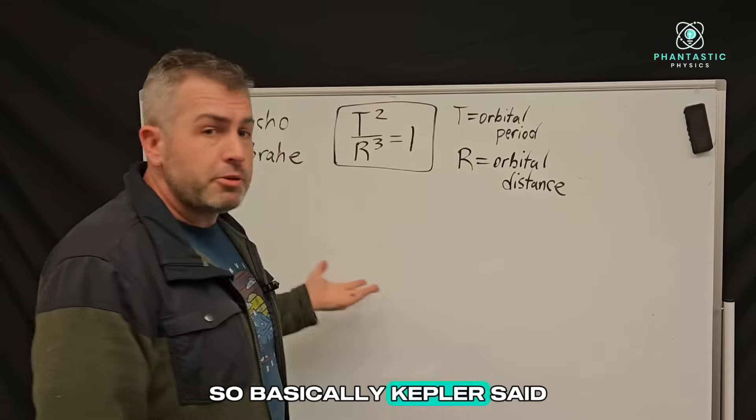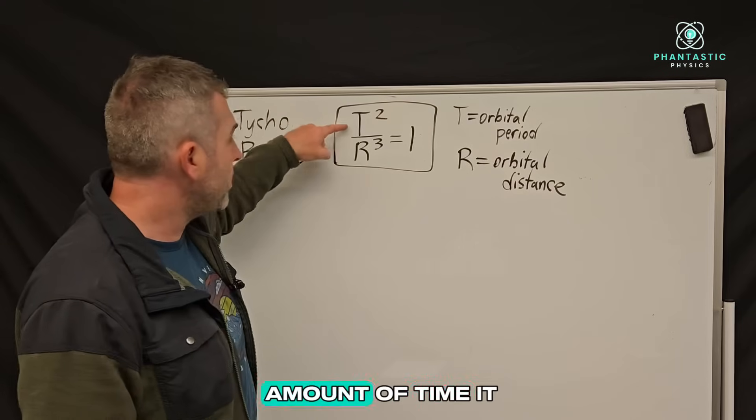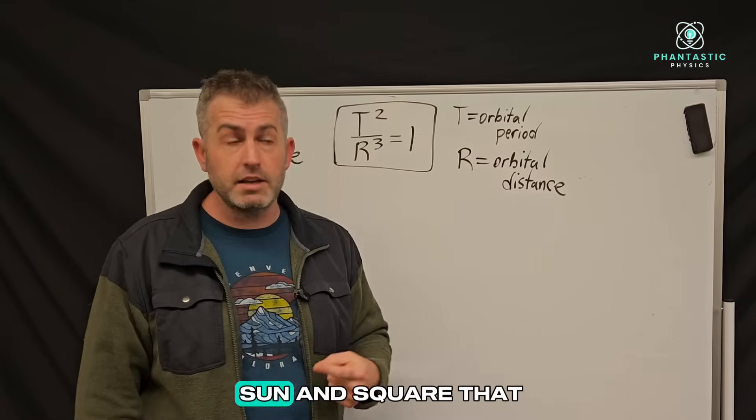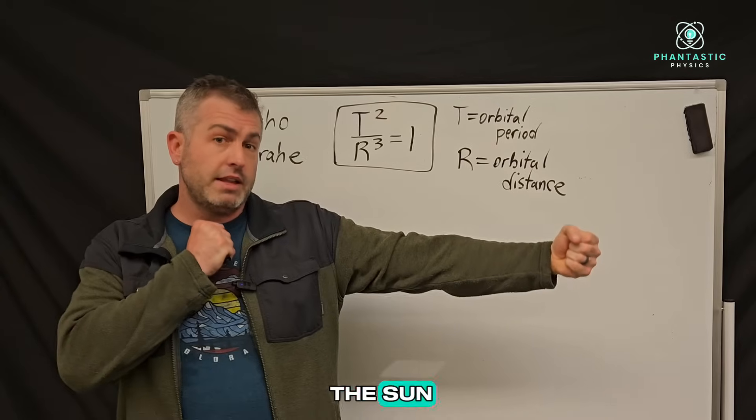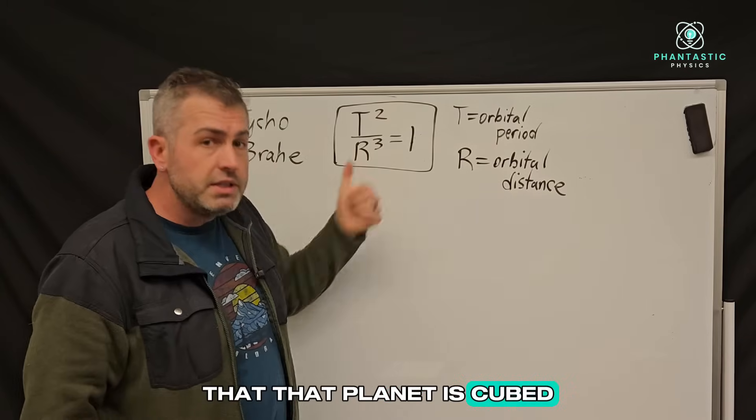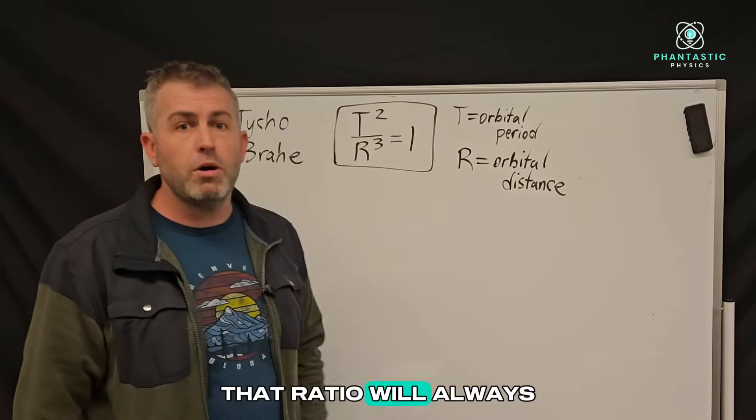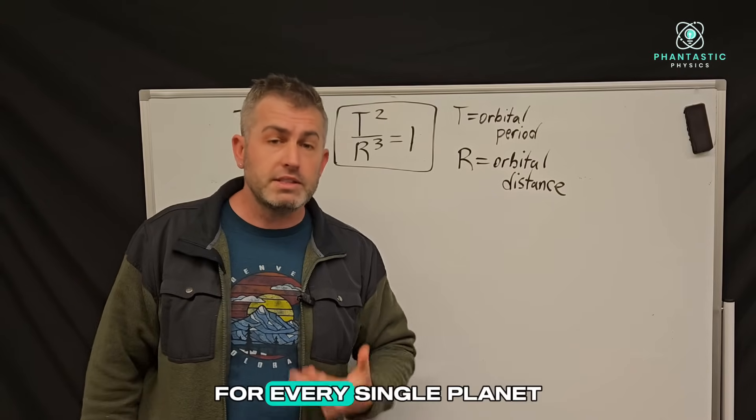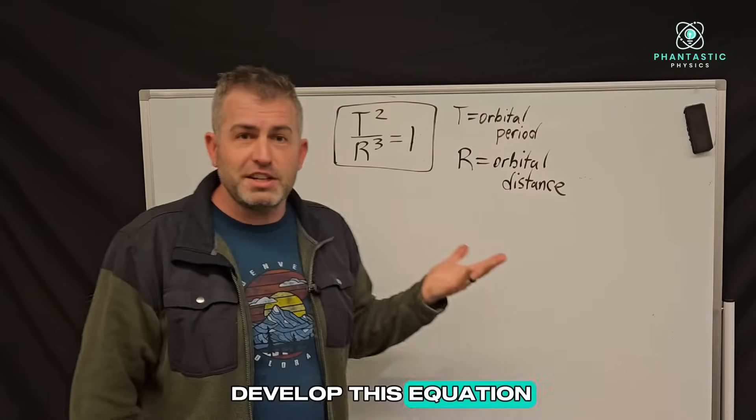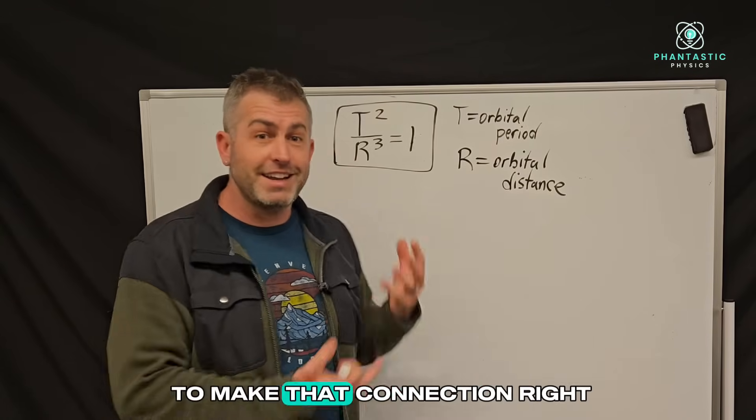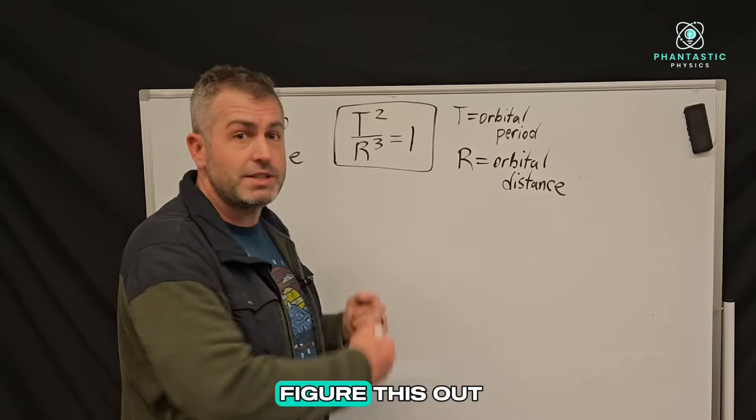Basically Kepler said, if you take the amount of time it takes for a planet to go around the sun and square that and divide that by the distance away from the sun that that planet is cubed, that ratio will always equal one for every single planet in our solar system. Now, how did he develop this equation? It seems so random to make that connection. How could we possibly figure this out?